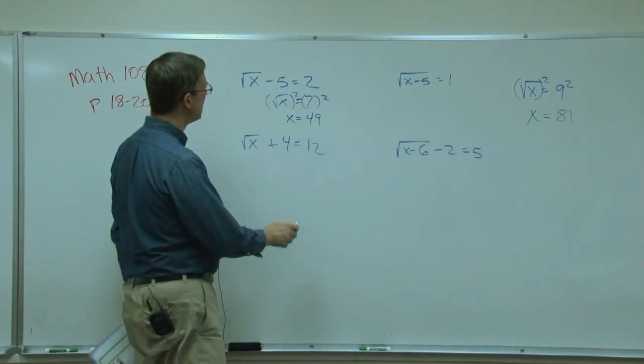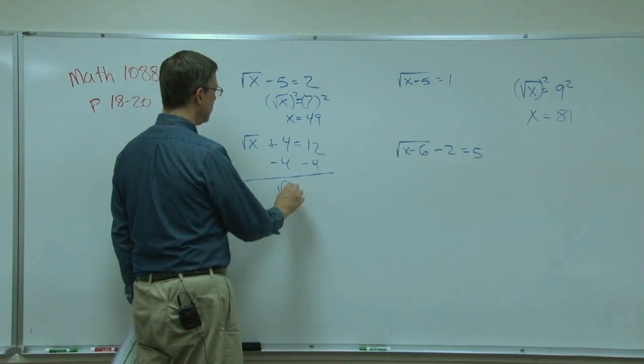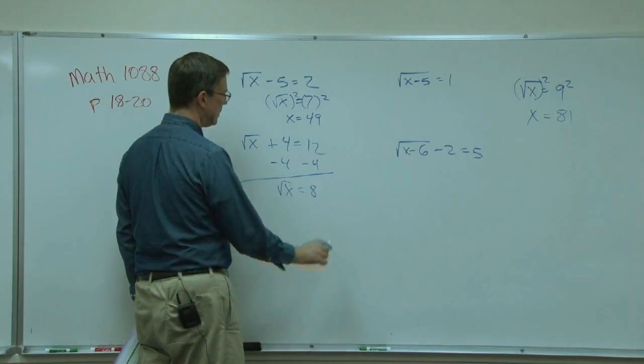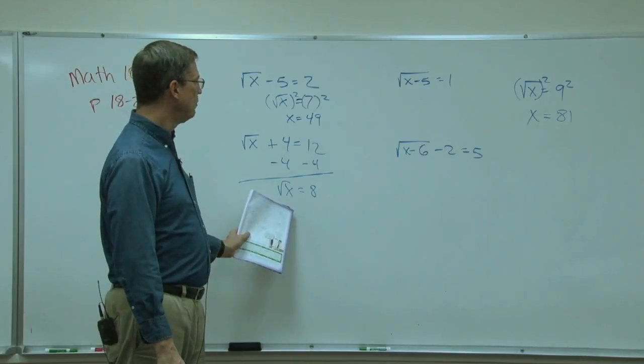Let's jump down here and try this one. We're going to this time subtract 4 from both sides, and so the square root of x equals 8. I'm not going to finish that one for you, but from here you can see that you'll square both sides and x equals tada.